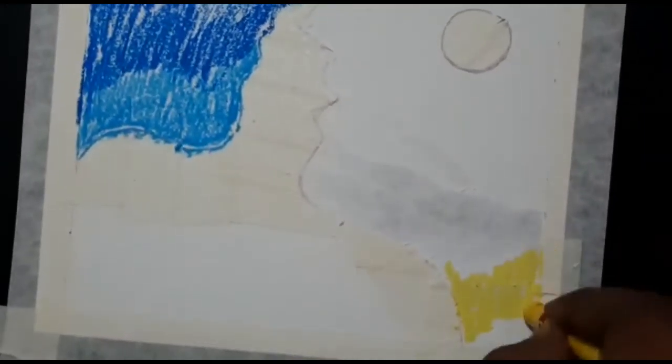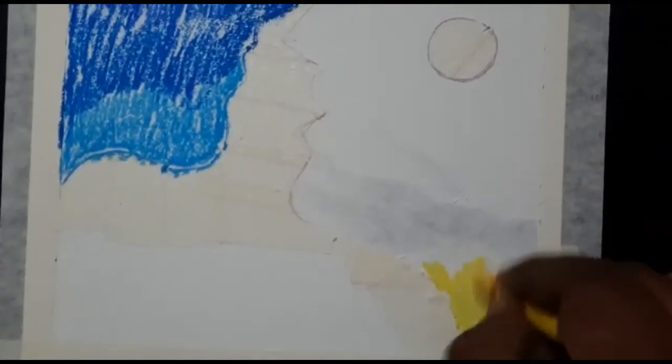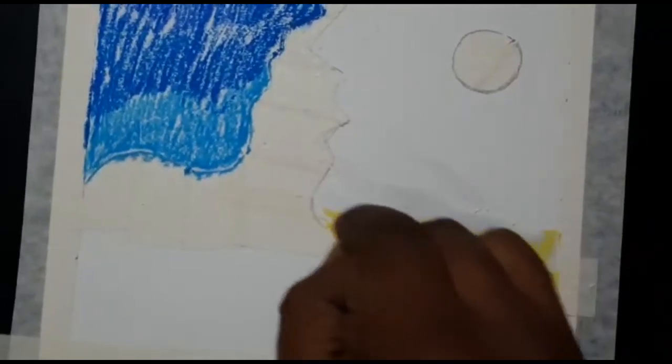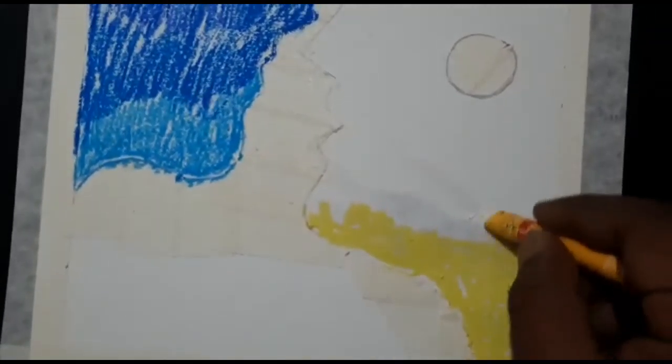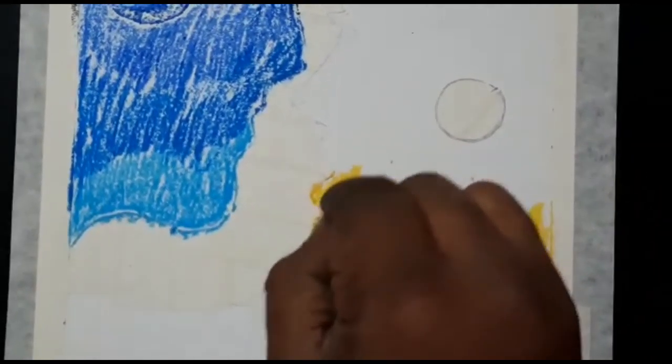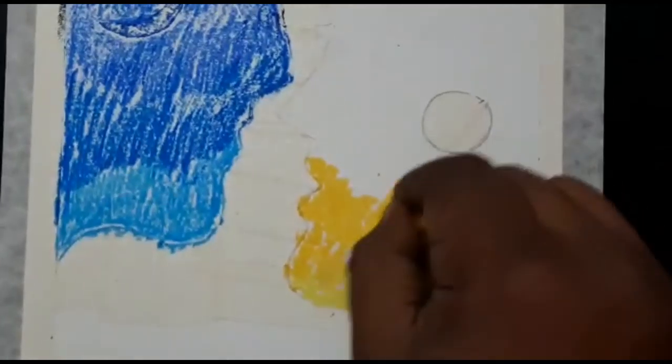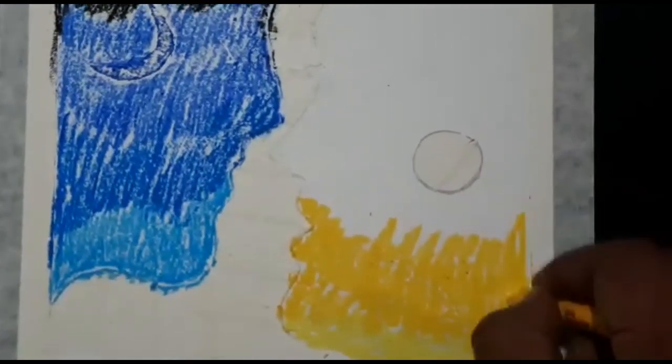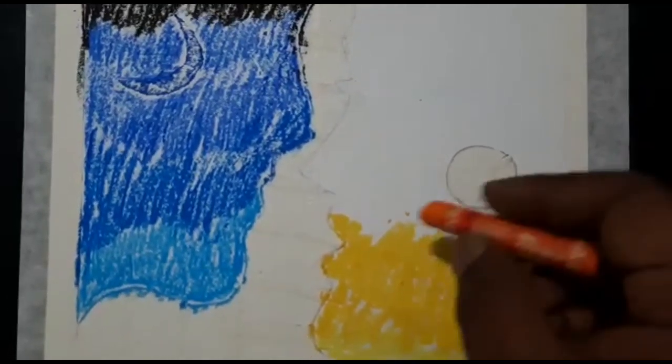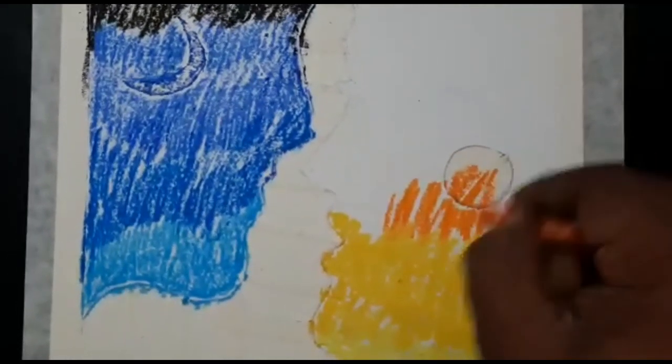Now for the other side, I'm using lemon yellow first, then chrome yellow medium hue, which is medium yellow, and then orange color.